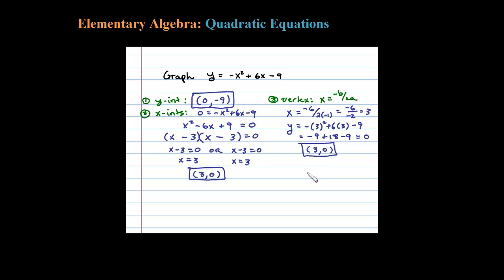We know the vertex occurs at 3 comma 0, so let's see what happens on either side of that vertex. Let's see what happens when x is 2 and also when x is 4.